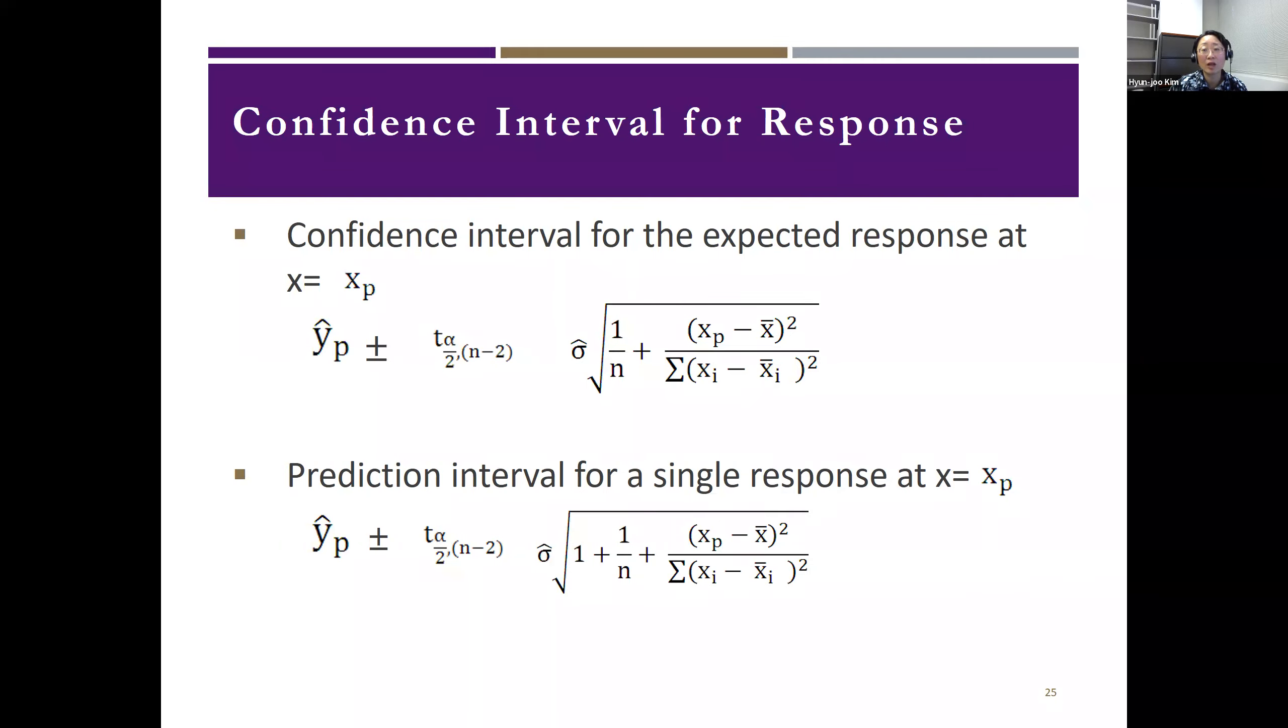In the roller coaster example, we can imagine one might be interested in the confidence interval of the average maximum speed with 150 feet maximum height. Or one might be interested in prediction interval of the maximum speed for one particular roller coaster with 150 feet maximum height.